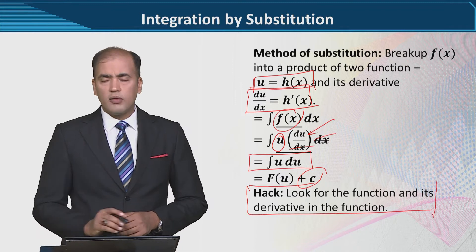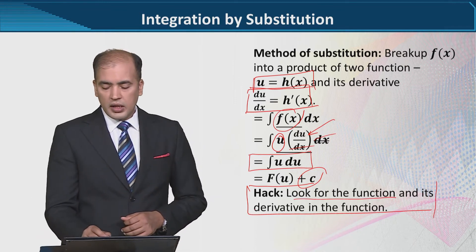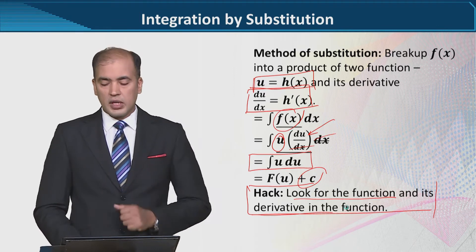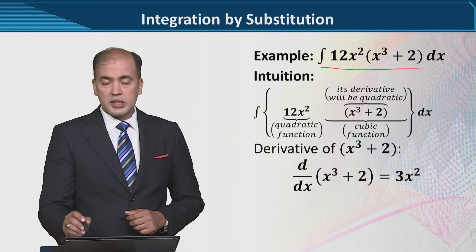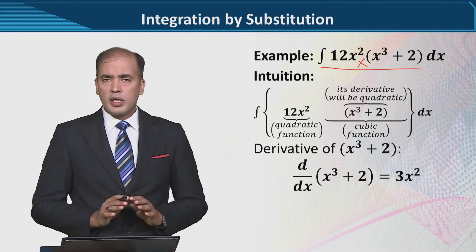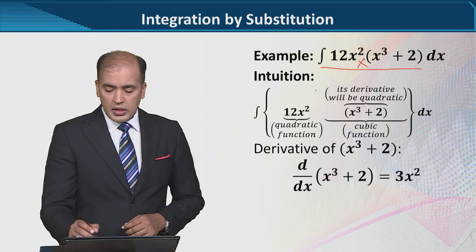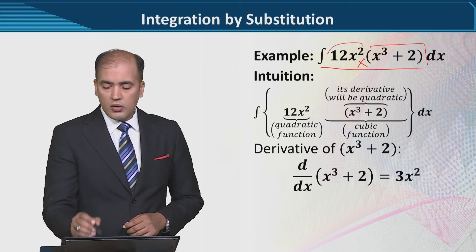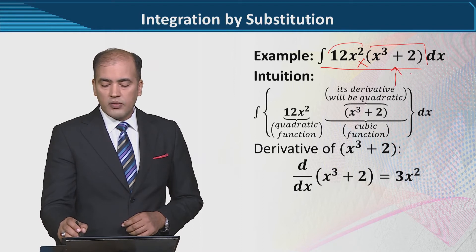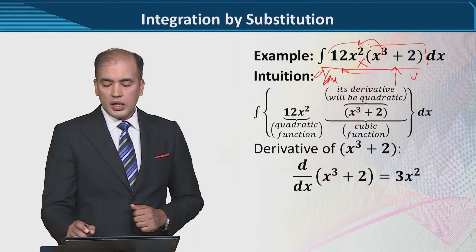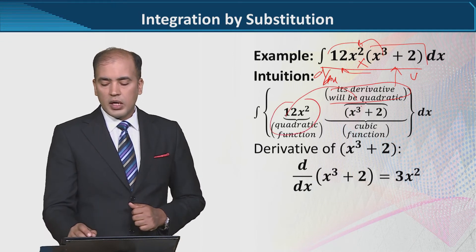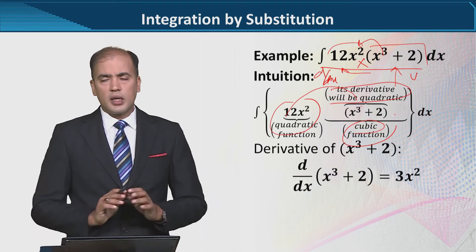Now there is a small tip — a hack. We need to look inside the function for its derivative. We discussed this before: u and its derivative. Here is the numerical example that will explain all of this. This is the given function whose integration we need to find. Two functions are multiplied here, which invites the substitution rule. This is the higher-power function, and this is the lower-power one. So you can assume this is the original function and this will become its derivative — because when we take the derivative of the higher power, one power reduces. x cubed becomes x squared.